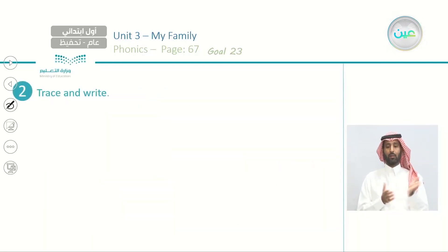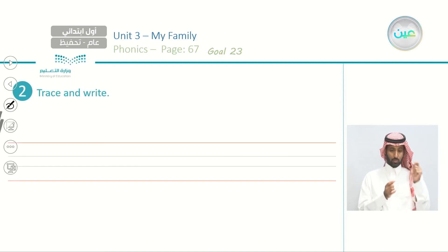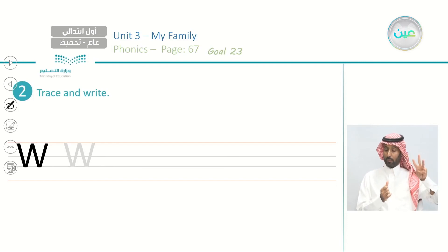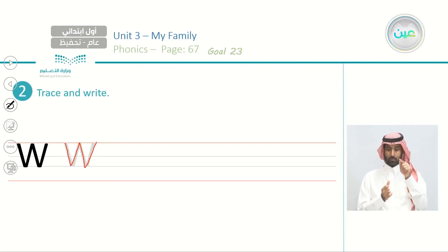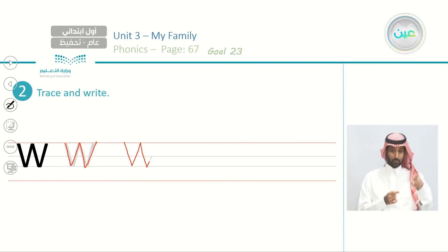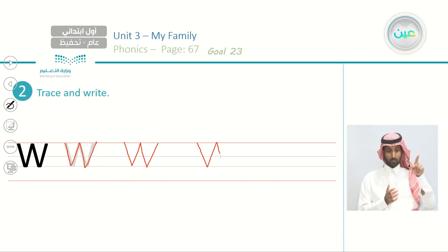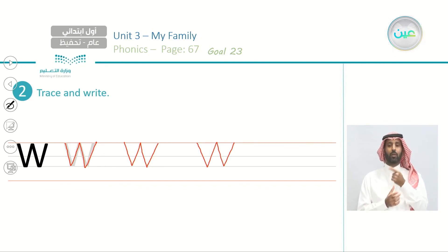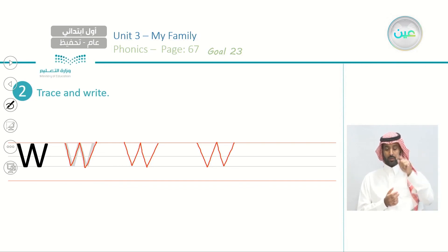Now number two — trace and write. What is this letter? W. Let's trace: one, two, three. Let's write it two more times. This is W, and W is pronounced as wah.